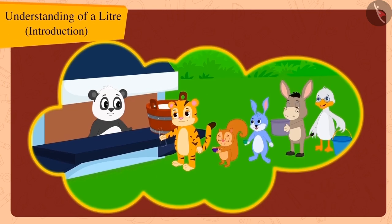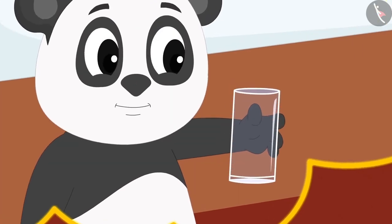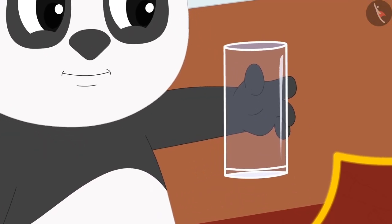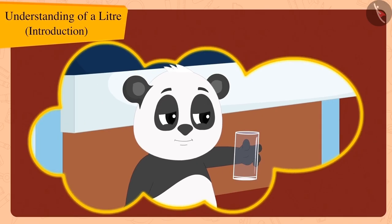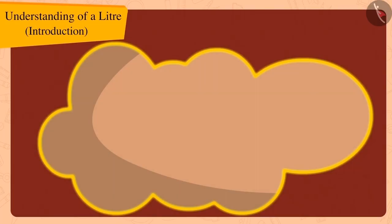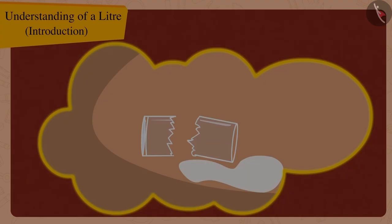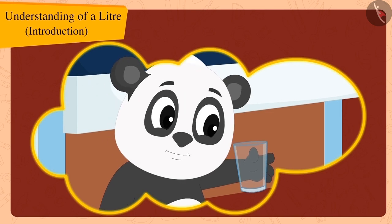Children, do you remember the long line outside Golu's Dairy? Golu was very easily selling milk to all the people using his glass up till now. But suddenly his glass broke yesterday and he had to buy a new glass.